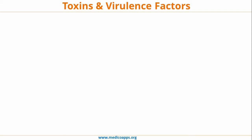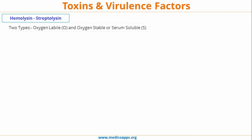Let's move forward to toxins and virulence factors. One of the first important toxins is hemolysin or streptolysin. It is of two types: oxygen-labile and oxygen-stable, also known as serum-stable. They are represented by the letters O and S. ASO titer — that is, Anti-Streptolysin O titer — is used in the retrospective diagnosis of Strep pyogenes infection, especially pharyngitis, where the titer is more than 200.